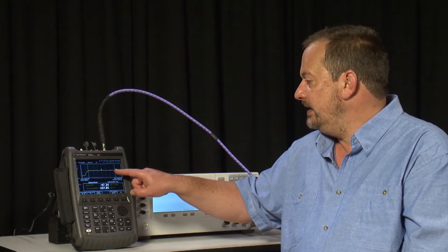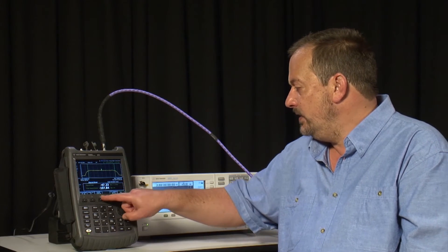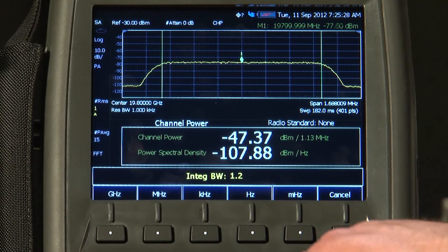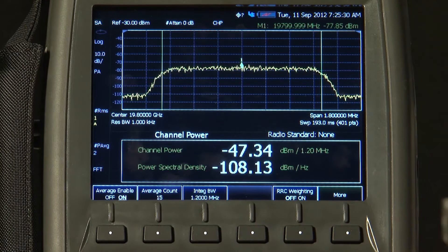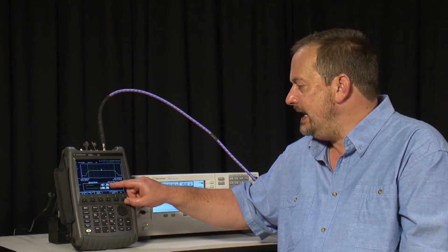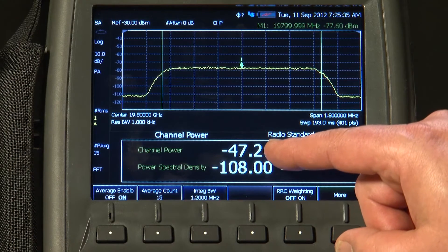Now I know the bandwidth of this signal is roughly 1.2 MHz, so I will just set the integration bandwidth to 1.2 MHz. And you will now see that the FieldFox is automatically calculating the total RF power,